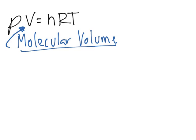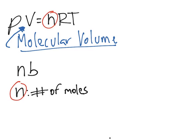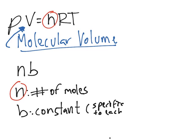So we have to modify this V right here. What we have to do is add a correction factor, and that correction factor will be nb. The n stands for the number of moles, and b is just a constant. But this constant is specific to each gas. So for oxygen, it's going to be different than for hydrogen.